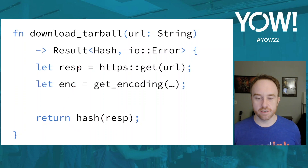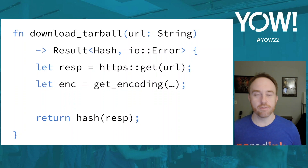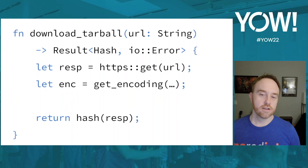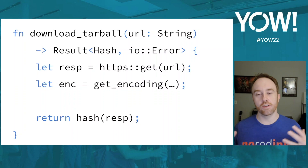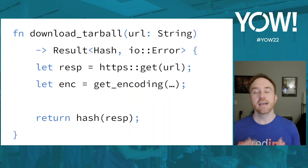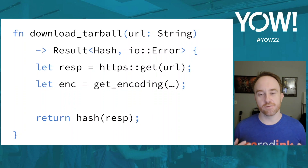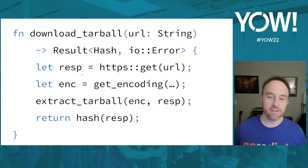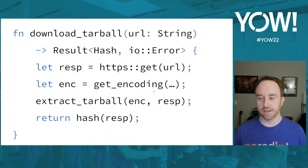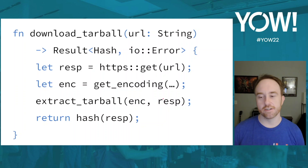To decompress the tarball, we need to figure out how it's compressed. We could look at the file extension in the URL, like .tar.gz, or use a content-encoding header from the response. There are a couple of ways to infer the encoding, which is important because we need to know how to decompress it. Then we call extract_tarball using the encoding from get_encoding, along with the response bytes to extract onto the file system.